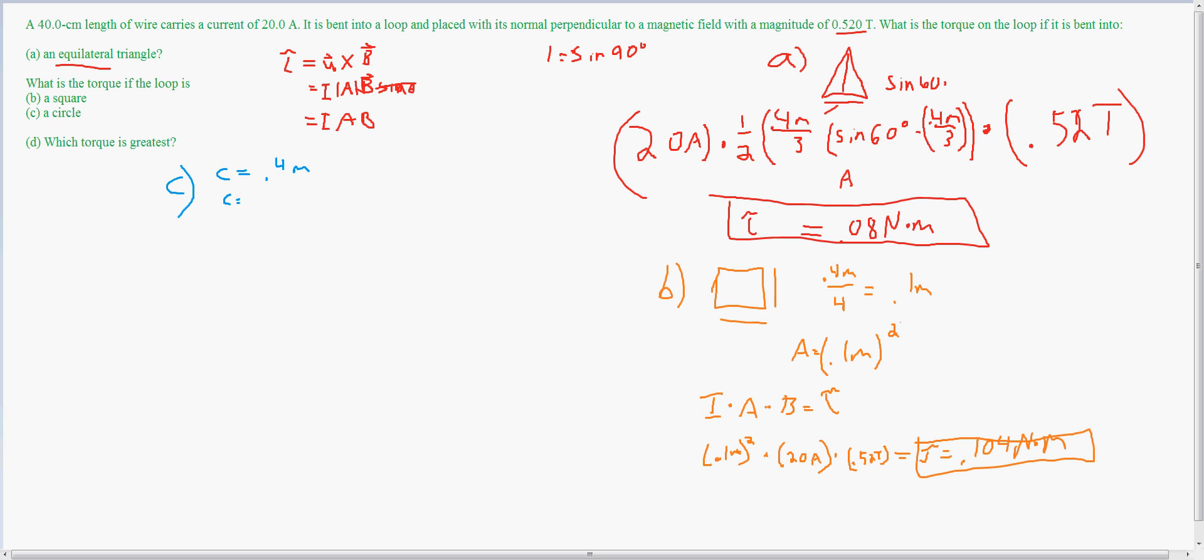The circumference is equal to 2 pi r. So I have 0.4 meters equal to 2 pi r. And now I'm going to divide, so r equals 0.4 divided by 2 pi.